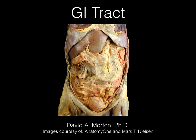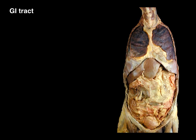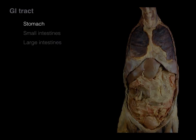The GI tract. The GI tract in the abdomen is composed of the stomach, the small intestines, and the large intestines. What we're going to do is focus on the stomach first.